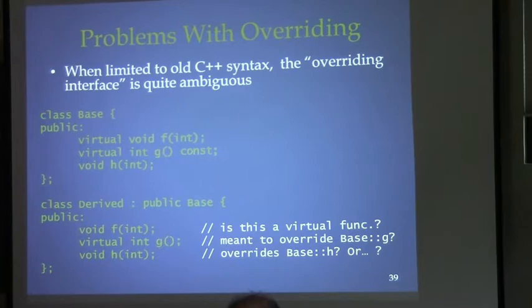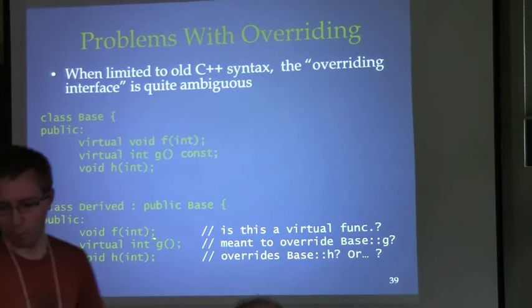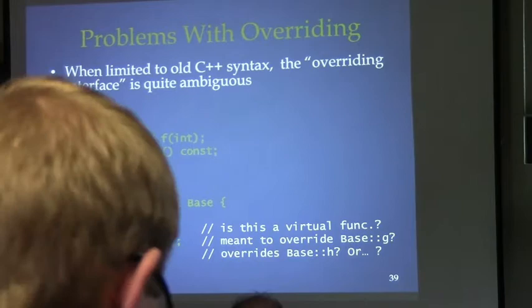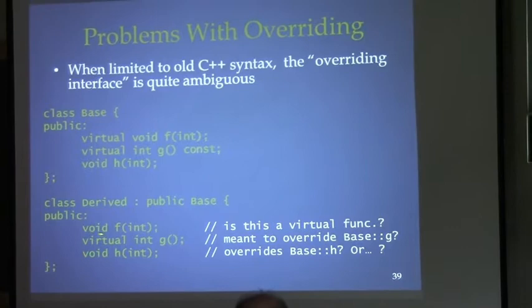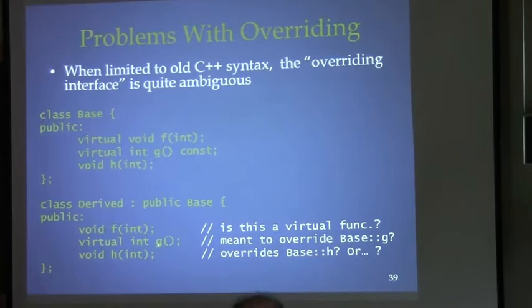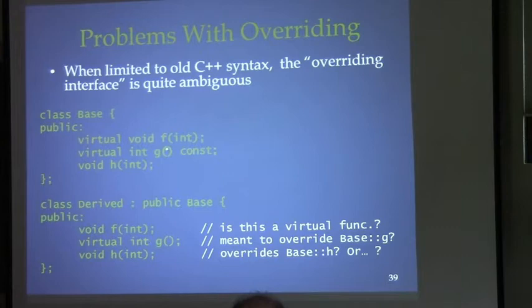In old C++, reading the derived class, here is f — it takes an int. Is this overriding something? We can't tell just by looking here; we have to look at the base class. And then we can determine, yes, it overrides that f. What about g? Does this override anything? In fact it doesn't — this is introducing a new signature, a non-const function g, which has no relationship to the base class's const g whatsoever. There's really no way in old C++ to say this is intended to be an override — it just isn't, and that's a silent failure until code starts to misuse it.